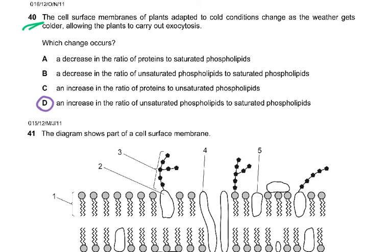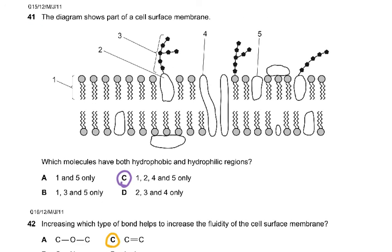Question 39. The table shows three processes that contribute to transport across cell membranes. Which processes are the result of random movement of molecules? All the three processes: diffusion, facilitated diffusion and osmosis are because of the random movement of water molecules. Question 40. The cell surface membrane of plants adapted to cold conditions change as the weather gets colder, allowing the plants to carry out exocytosis. Which changes occur? An increase in the ratio of unsaturated to saturated. So it was very simple because of the unsaturated fats and the saturated fats, you've got to remember that story.